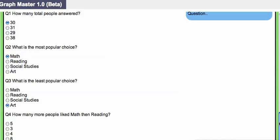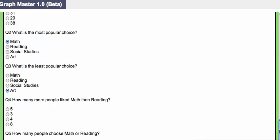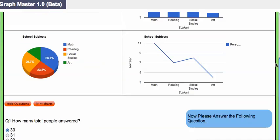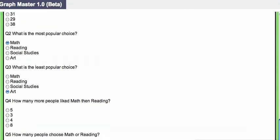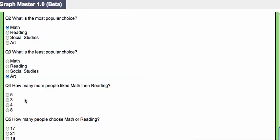The fourth question asks, how many more people liked math than reading? Let's go up and look. We had 11 people who liked math, 7 people who liked reading, so that means 4 more people liked math.